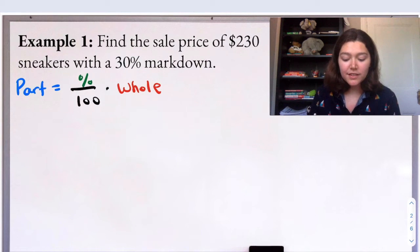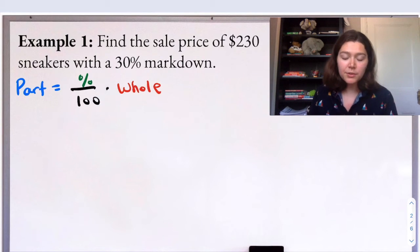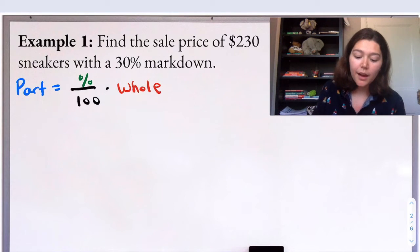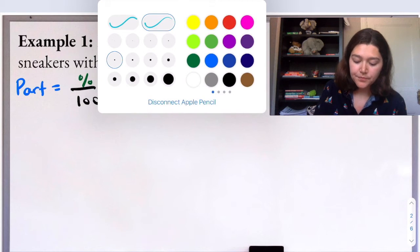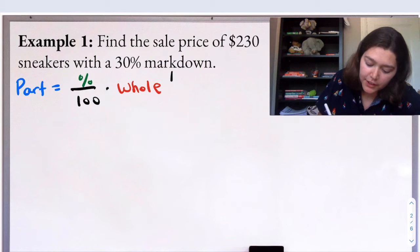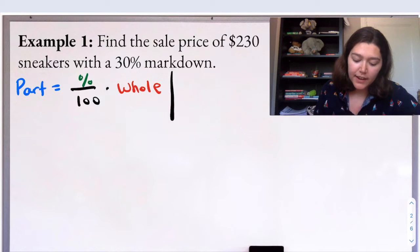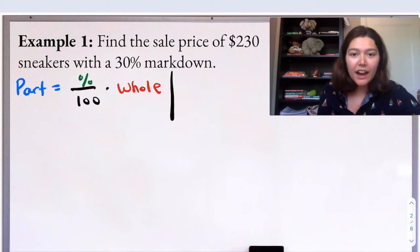So we have example one. Find the sale price of $230 sneakers with a 30% markdown. You can see I wrote the percent equation here, which is what I'm going to use this time. I could also use the percent proportion. The hard stuff here is going to be figuring out what we're given and what we need to find out.